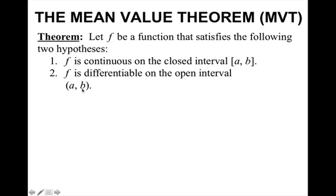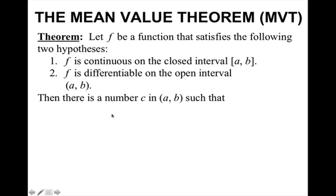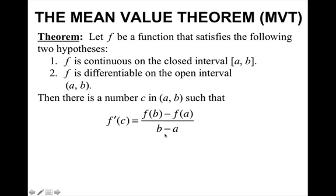The only reason why this is open is because you cannot differentiate at the endpoints. Then there is a number c — another x value — in the interval a to b, such that the derivative at that x value equals the value of the slope of the line that goes through the endpoints. In other words, there exists some x value in the interval whose tangent line has the same slope as the slope that goes through the endpoints, or the slope of the secant line.